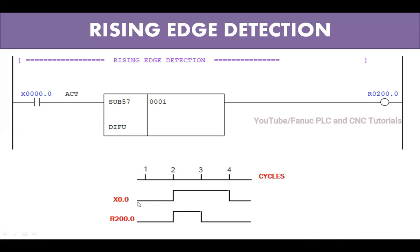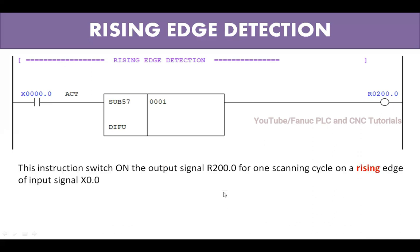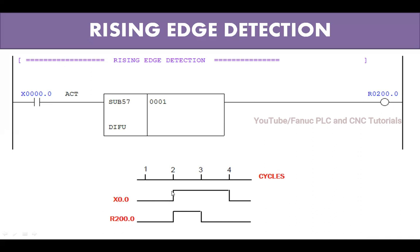Initially the input is off. When I switch it on, the input is on continuously, but you can see R200.0 is on only for one scanning cycle. After one scanning cycle it is off again, even though the input is still on. So R200.0 is on for only one scanning cycle on the rising edge of X0.0 — rising edge means whenever X0.0 becomes 0 to 1, that is called rising edge.